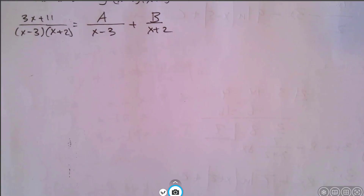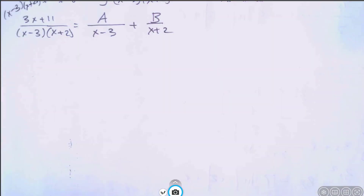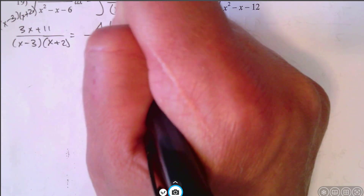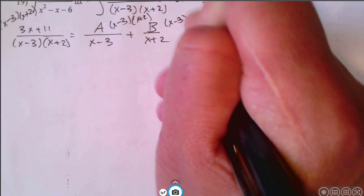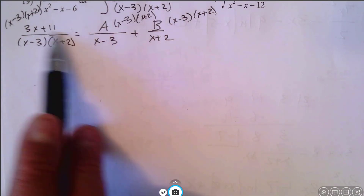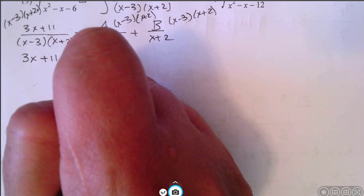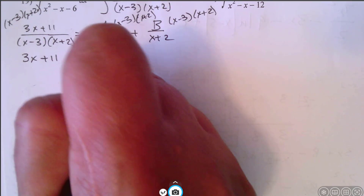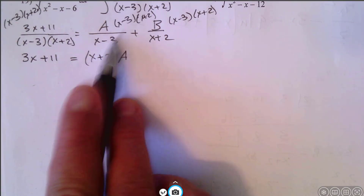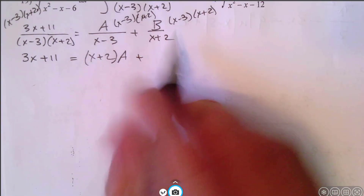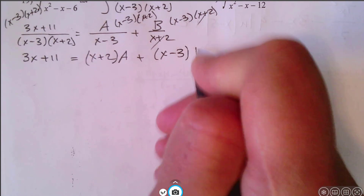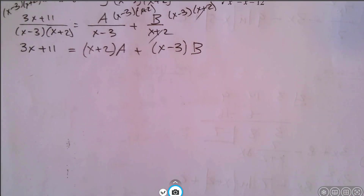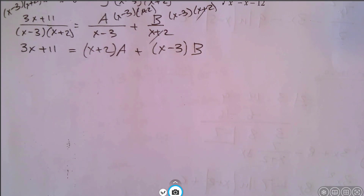When we multiply both sides by the LCD x minus 3 times x plus 2, the whole denominator on the left cancels out. On the right, the x minus 3 cancels leaving x plus 2 times a, and the x plus 2 cancels leaving x minus 3 times b. So now we have an equation with both a and b. The trick here is that we want to zero these out — we're going to let x equal a number so that something disappears. If we want the b term to disappear, we let x equal negative 2, so that x plus 2 becomes zero.